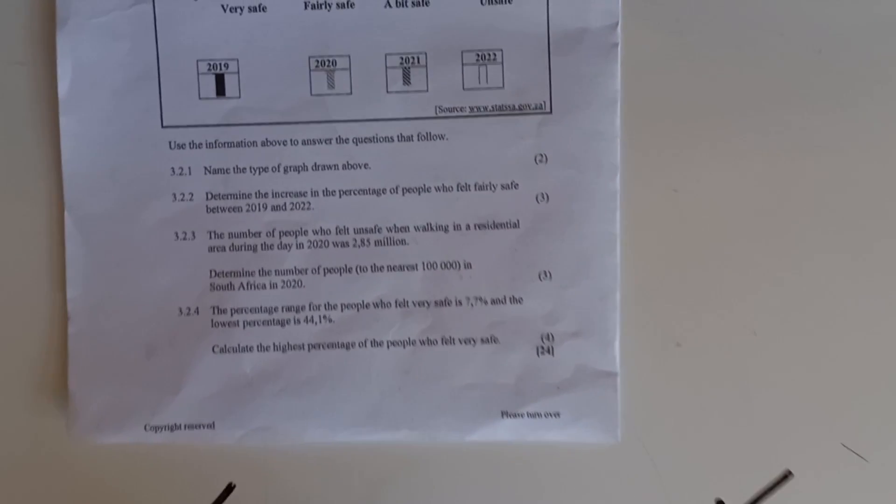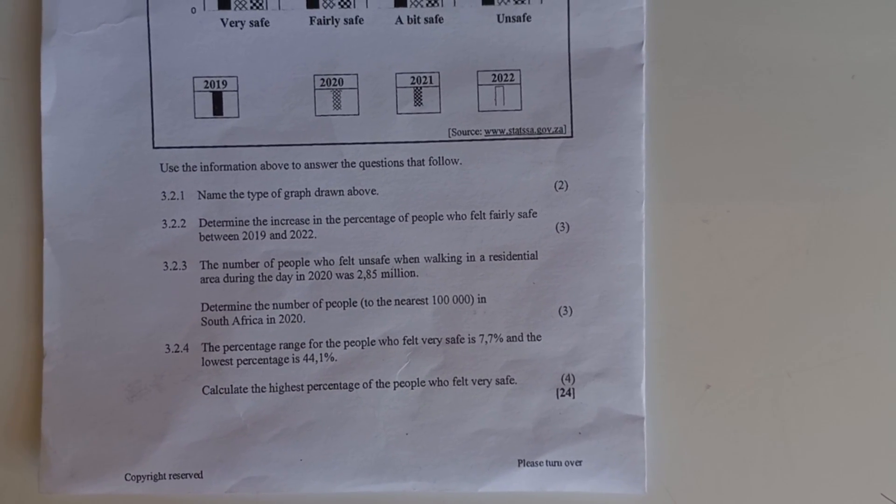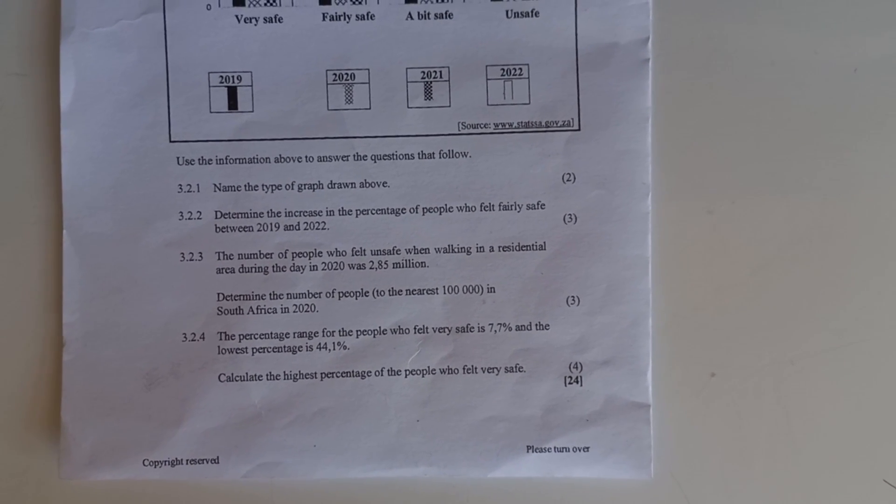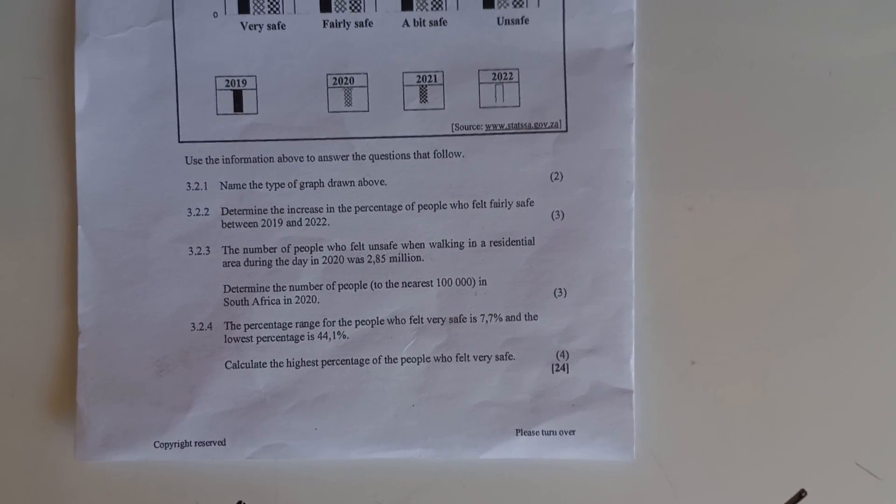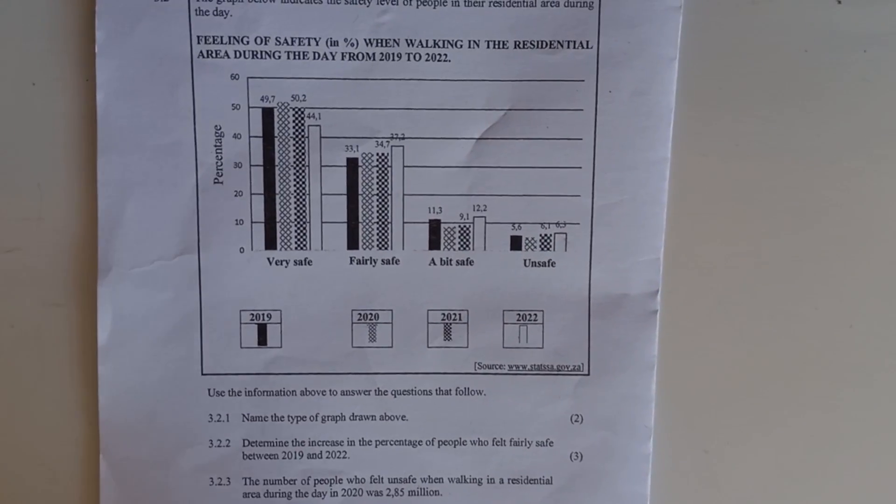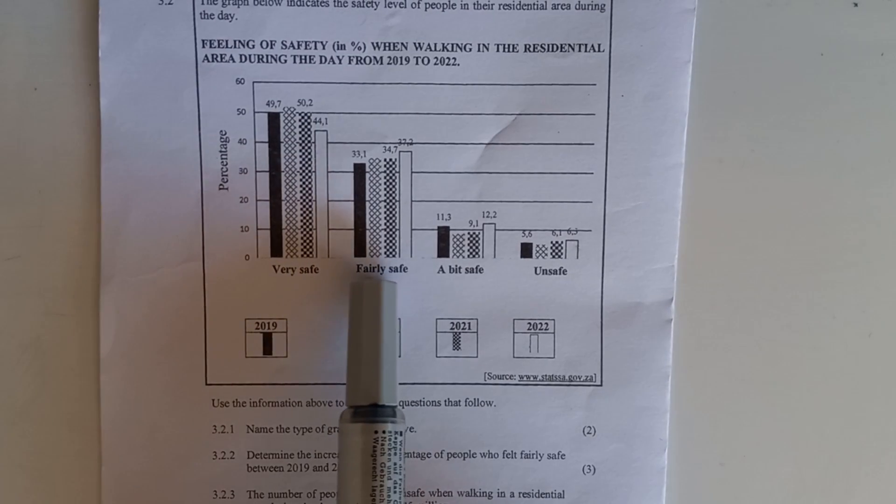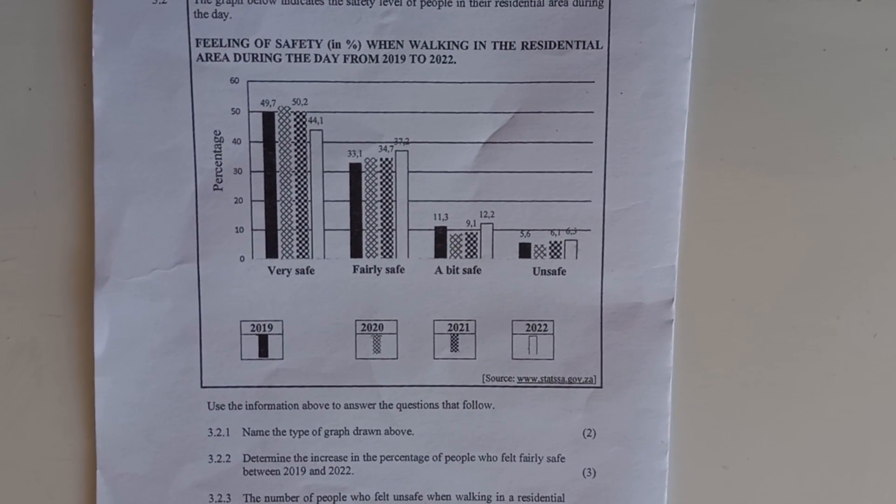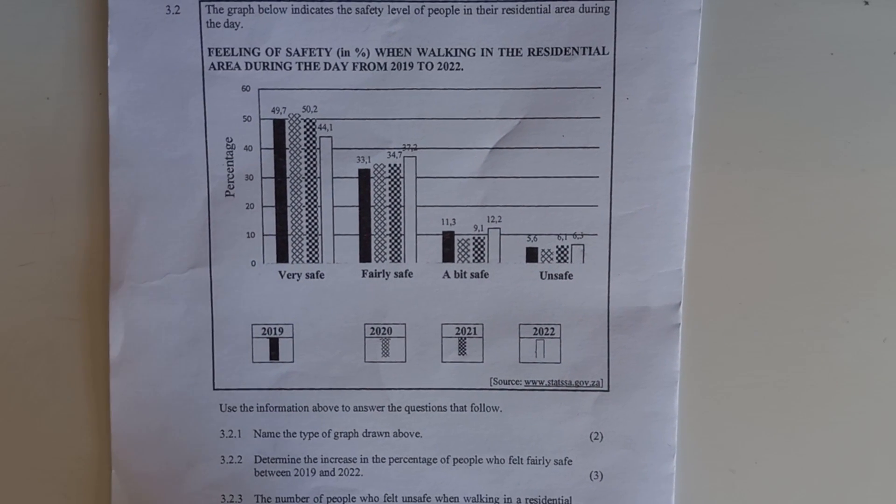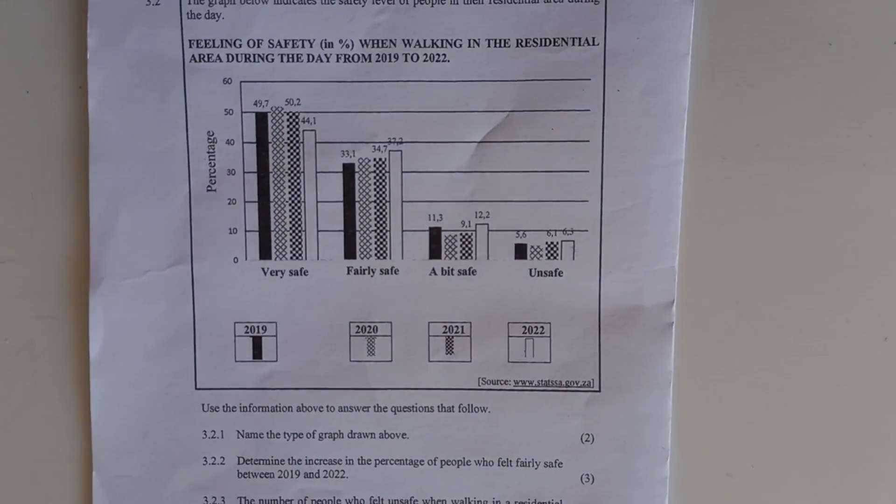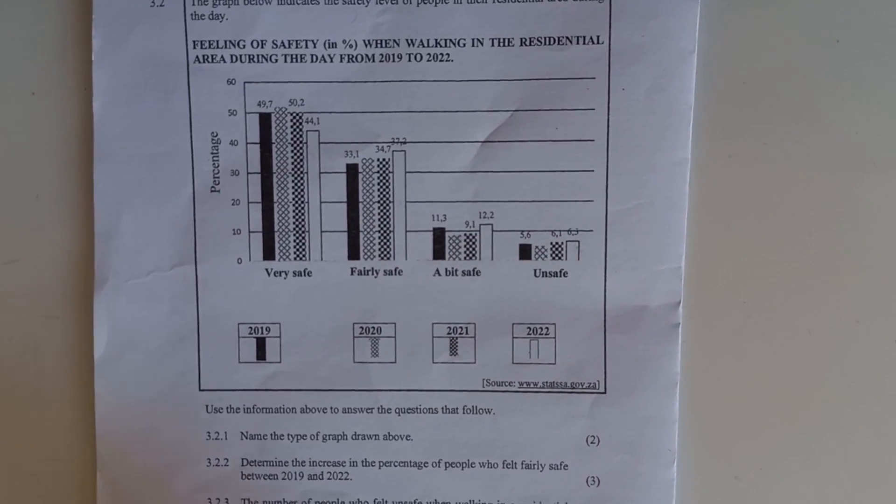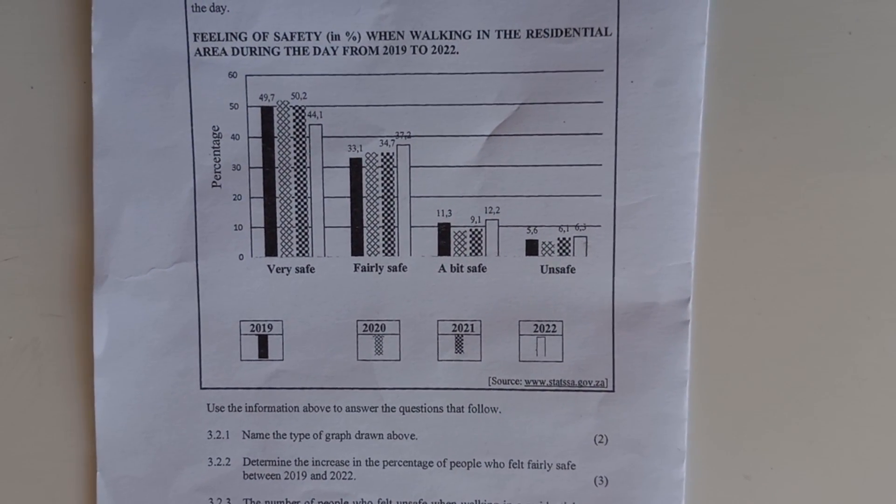Next question 3.2.2. Determine the increase in the percentage of people who felt fairly safe between 2019 and 2022. We're gonna look for fairly safe. Fairly safe is this one. And then we are looking for 2019 and 2022. 2019 is the black one. It's 33.1 percent and then 2022 is the last column. It's 37.2 percent.